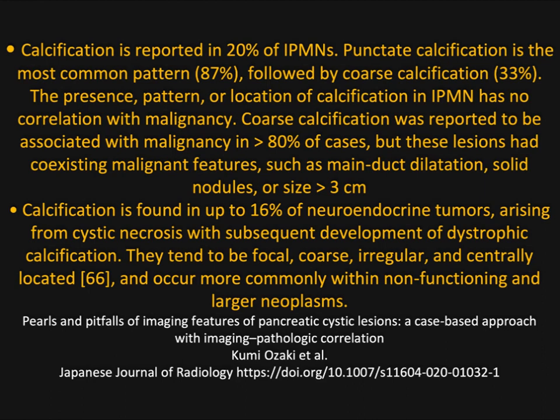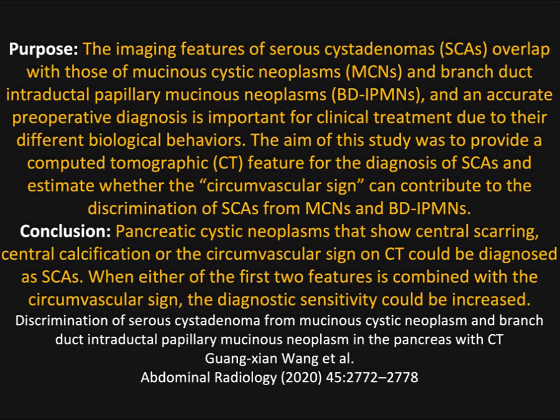A key distinction between IPMNs and MCNs is that IPMNs are commonly associated with duct dilatation. You can have mixed-type IPMNs where there's tumor in the duct or high-grade dysplasia as well as cystic lesions. Calcifications can be seen in about 16% of neuroendocrine tumors, but they tend to be more focal, coarse, and irregular. With neuroendocrine tumors the wall is thicker, and it's the enhancement that makes the diagnosis straightforward.